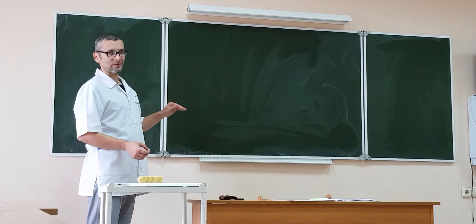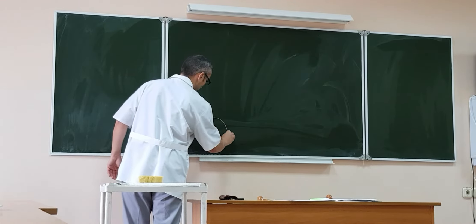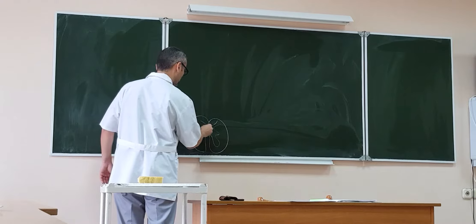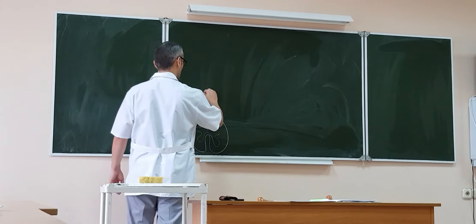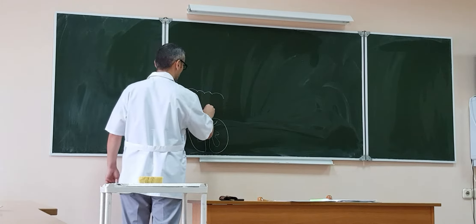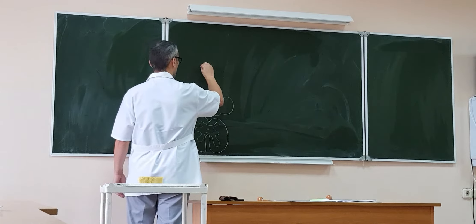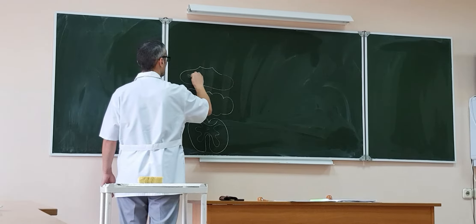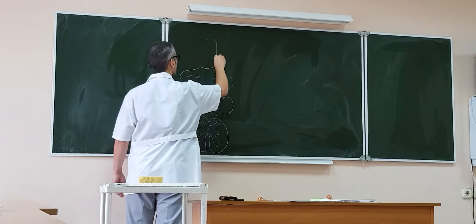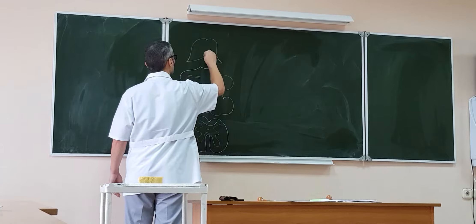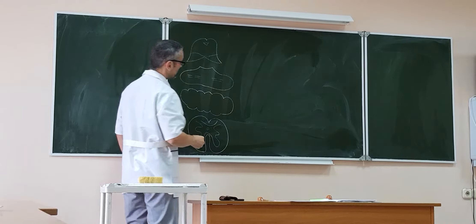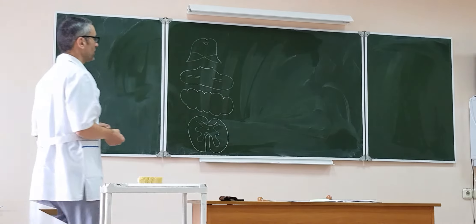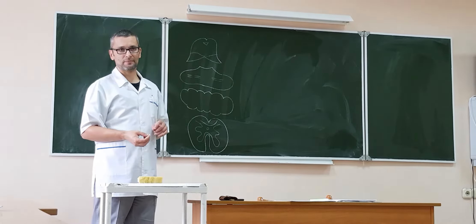As usual, you have to draw this cross-section as part of the brain. Let's begin from the spinal cord. Here is the spinal cord. Above the spinal cord you have to draw the midbrain and medulla. The basic tract of the extrapyramidal system is tractus rubrospinalis.